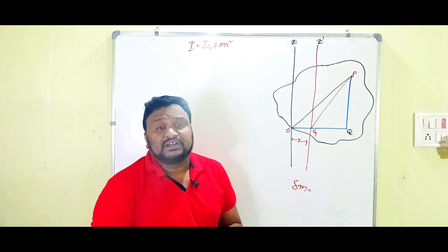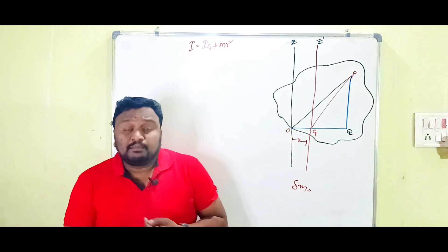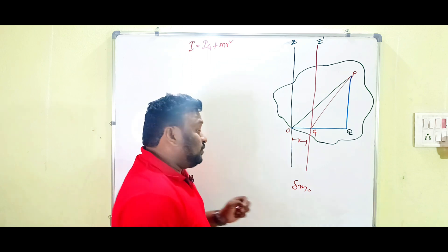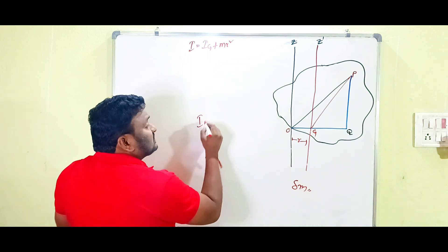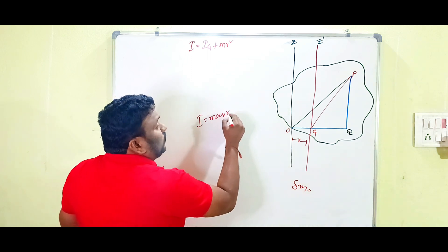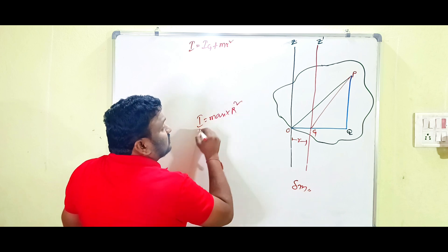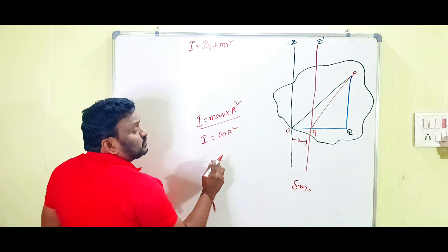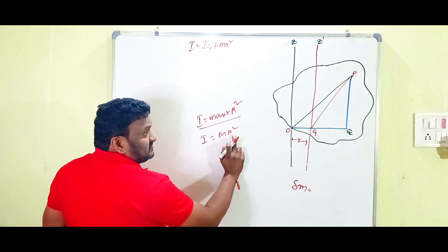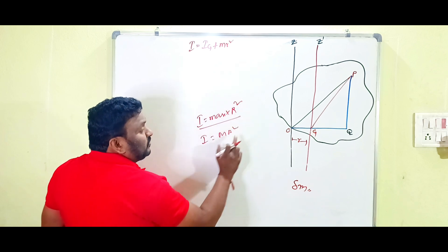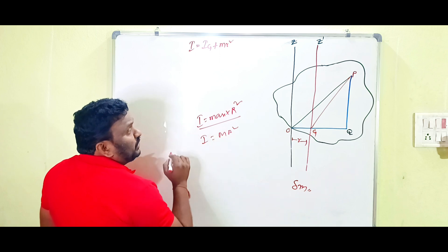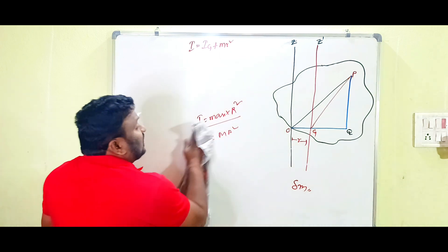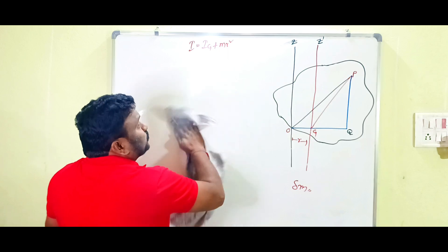To prove the theorem, we first need the formula for moment of inertia. The moment of inertia formula is I = MR² — that is, mass multiplied by the square of the distance. This is the general formula for moment of inertia that we are going to use.